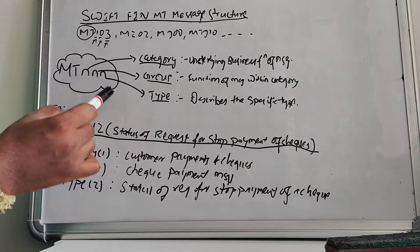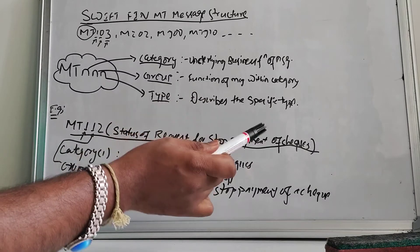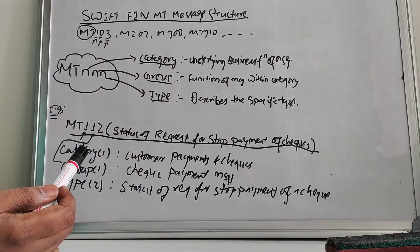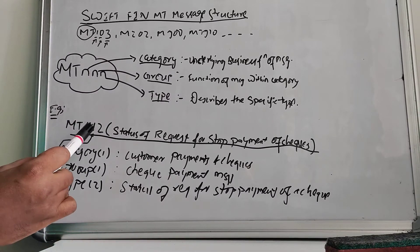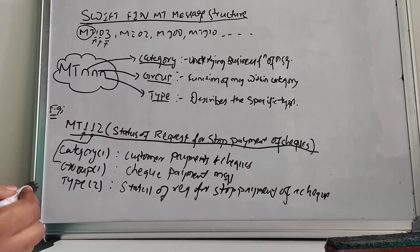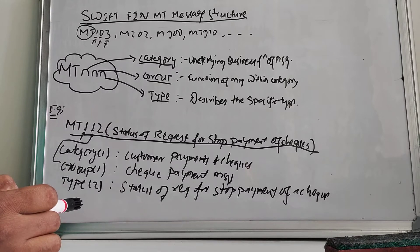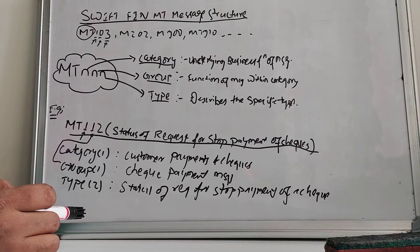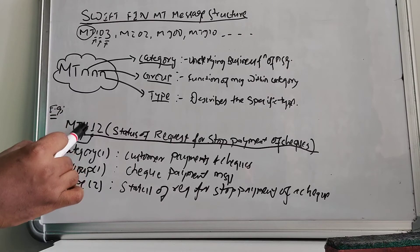To understand this SWIFT FIN MT message structure, let's take an example. MT112 is a popular example we can take to help you understand. MT112 is used for getting the status of the request for the stop payment of checks. Now let's understand each digit used in MT112.